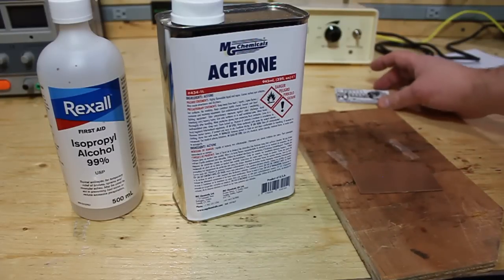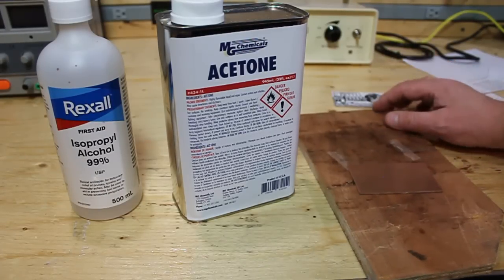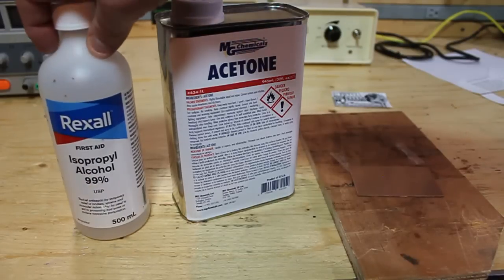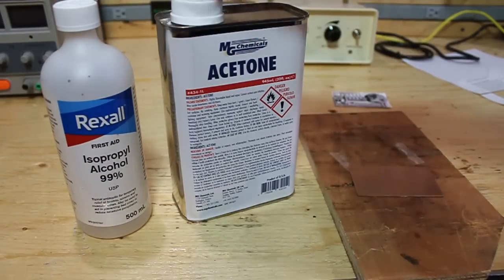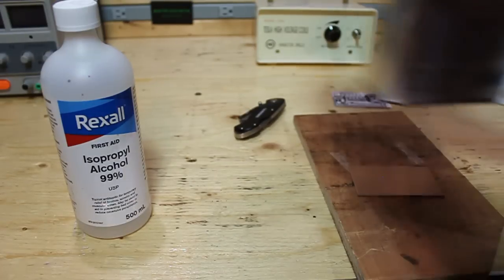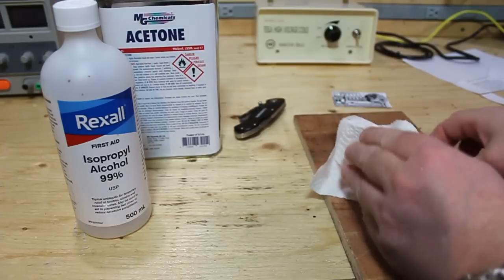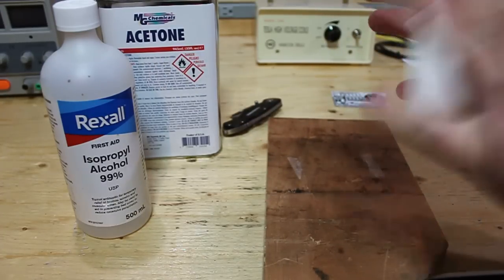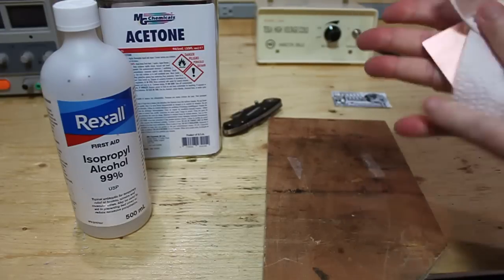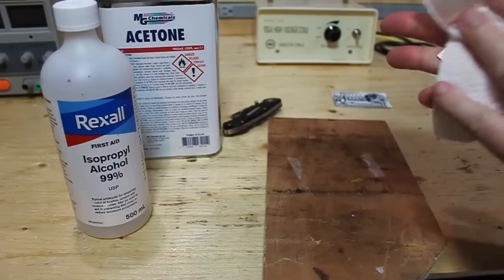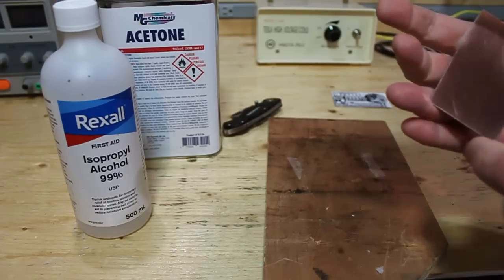Before I apply the glossy paper printout to the board, I'd like to clean it one more time. You can either use 99% rubbing alcohol or acetone, and in this case I'll use acetone. Just be careful with this stuff, it's flammable, and if you have any cuts on your hand you'll know in a second. So there we go. One nice clean board ready to go.